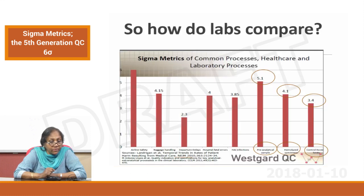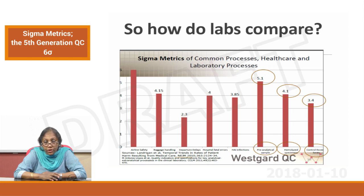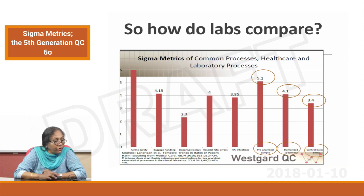Looking at some sigmas on the Westgard QC site — airline safety is 6 sigma. Would you get into an aircraft if they did not offer you that kind of safety? Very unlikely. So that is a 6 sigma operation: every nut and bolt must be in place. When you come to airline baggage handling, maybe not that good — 4.15 — but you can still deal with it. Departure delays: 2.3 — not acceptable.